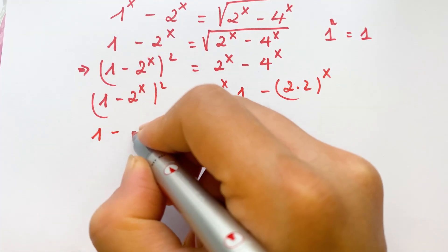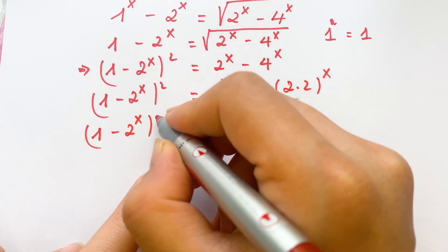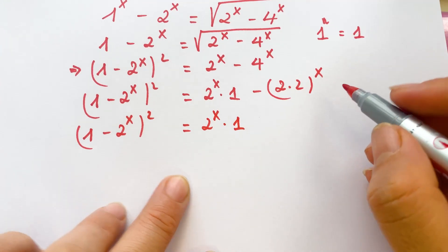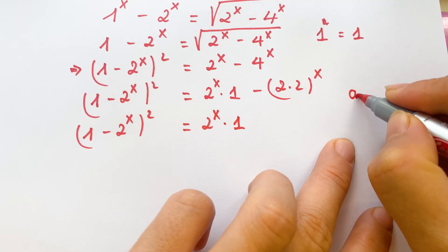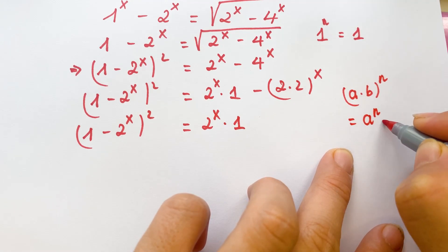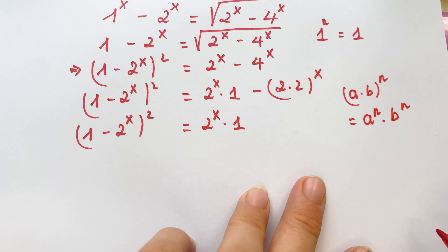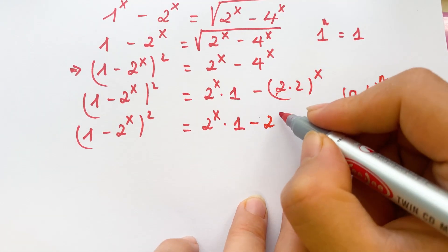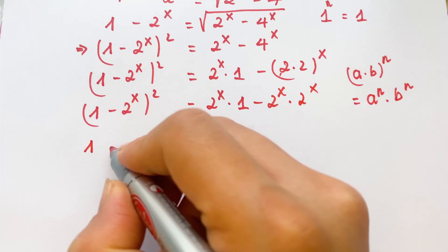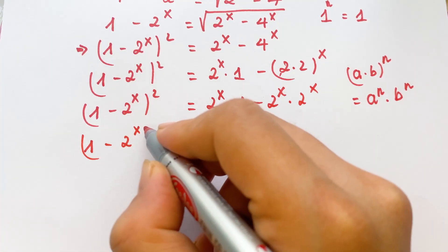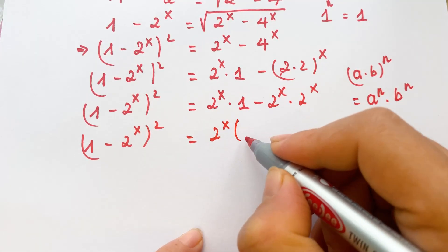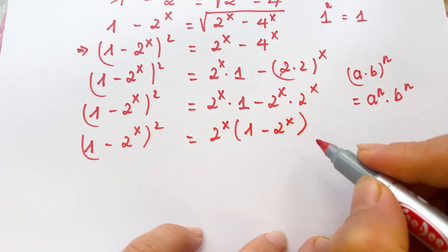So we can say 1 minus 2 power x, whole power squared, equals 2 power x times 1. And here, we have the rule: a times b, whole power n, equals a power n times b power n. So therefore, we can write 2 power x times 2 power x. Then 1 minus 2 power x, whole power squared, equals 2 power x, and you can take 2 power x out with 1 minus 2 power x in brackets.